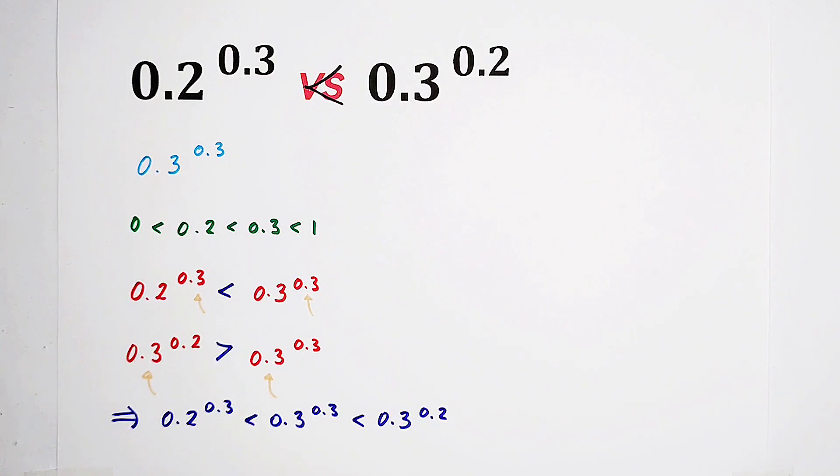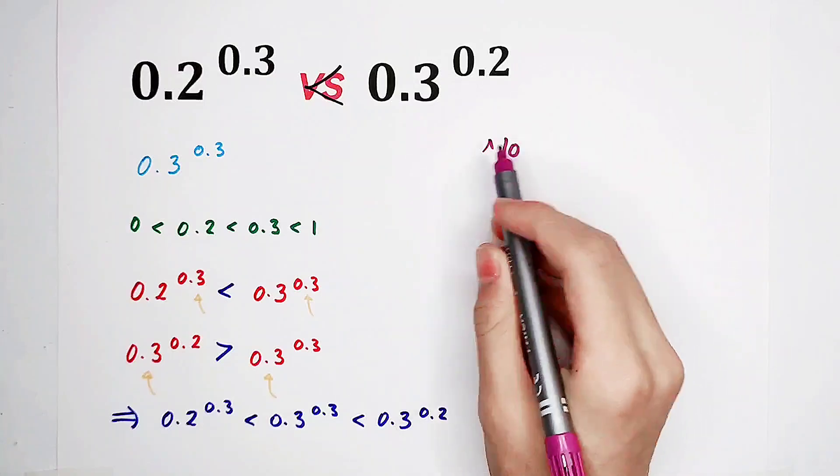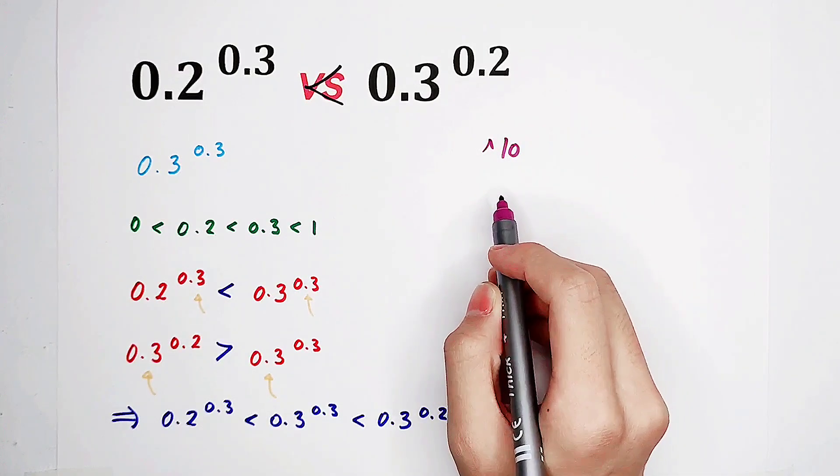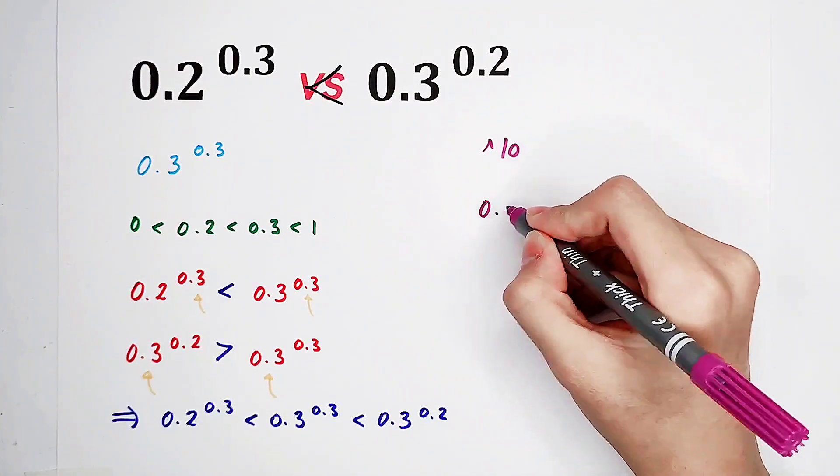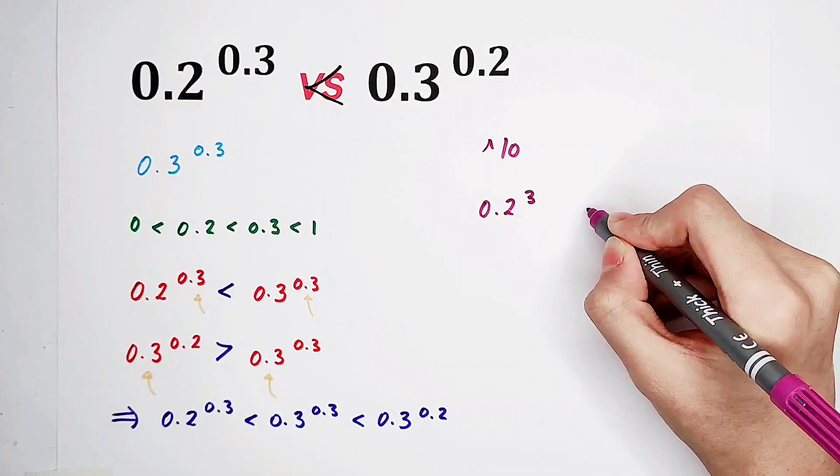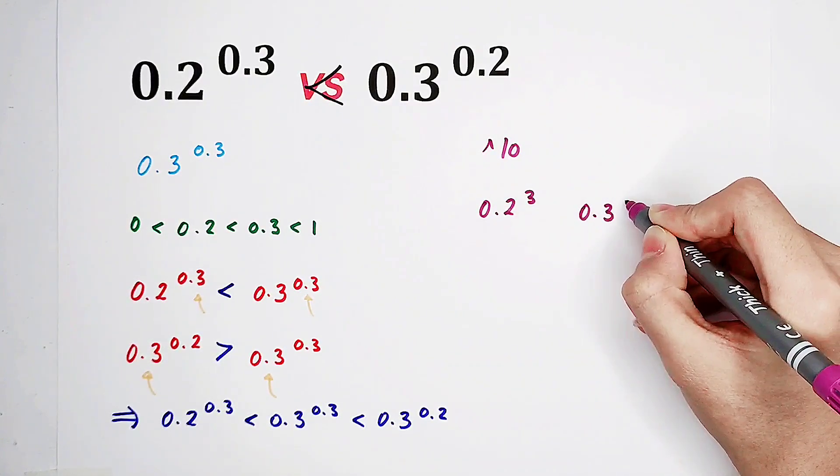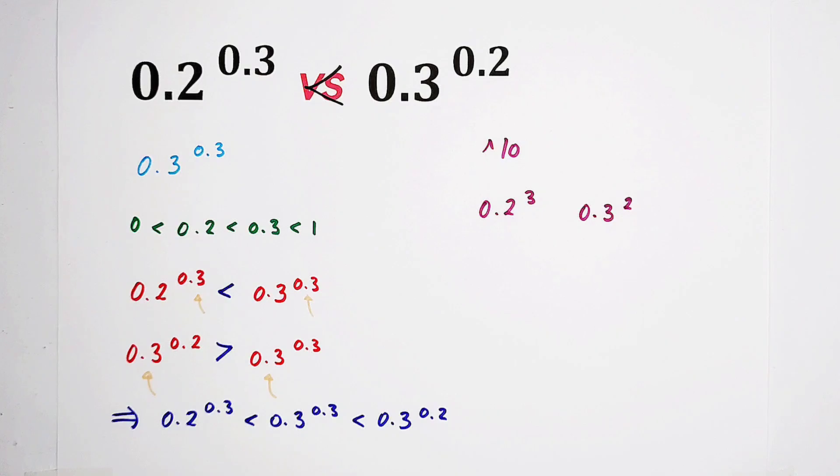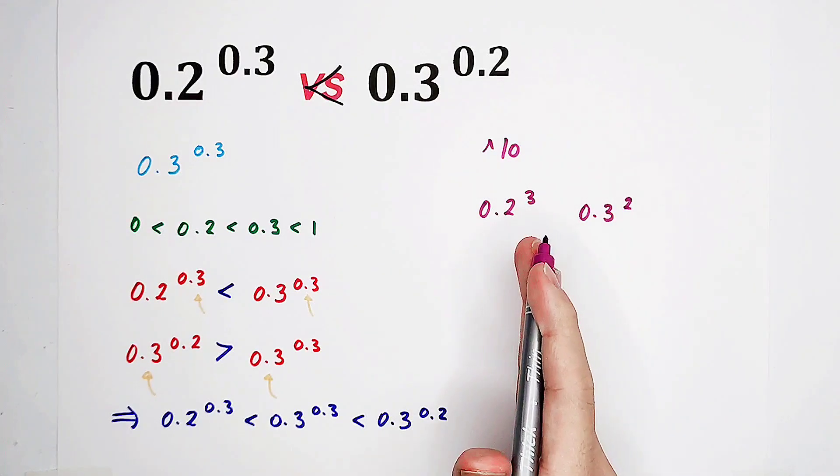However, there are also many other ways. For example, you can raise the power of 10 on both sides, and then you will get 0.2 to the power of 3 with 0.3 to the power of 2. Calculate them. This is much, much faster.